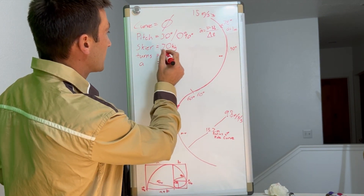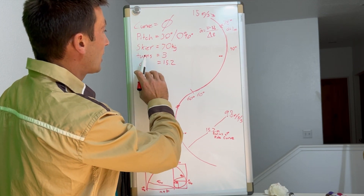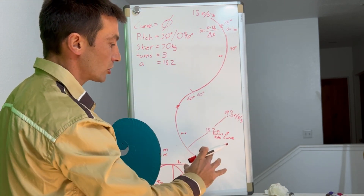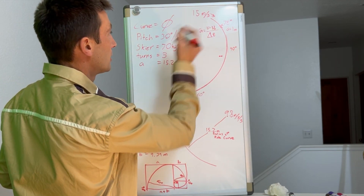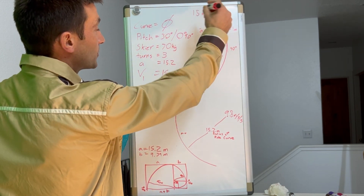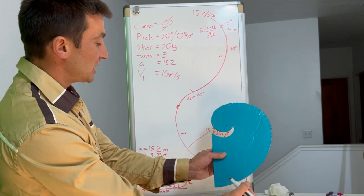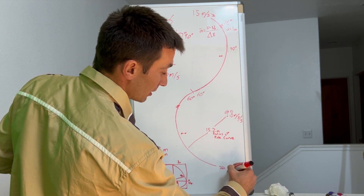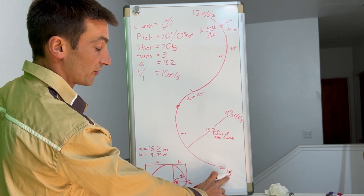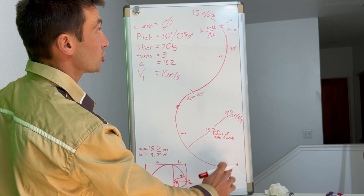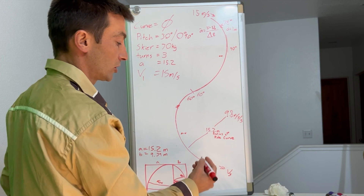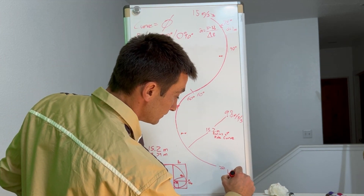Let's call the skier 70 kilograms. I want this to be done as a three-turn section — I can only draw two here because my template is too big for the board. I think an entry speed of V1 = 15 meters per second, with one entry turn, two turns, and a third turn. The exit velocity V3 at turn three is what we're solving for — either the exit velocity or the time T from t=0 to 60 degrees at the bottom of the third turn.